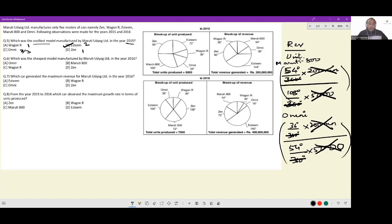Okay, next. Which was the cheapest model manufactured by Maruti Udyog Ltd in the year 2016? If you understood question 5, question 6 would also be easy to understand. This time we are not looking for the greatest value of the fraction created, we are looking for the smallest value.